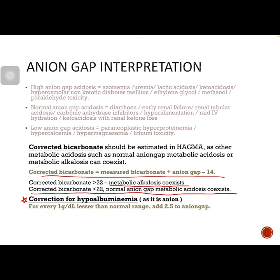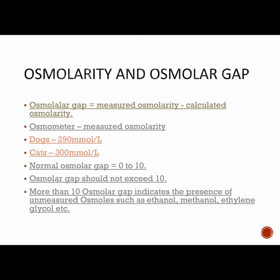If hypoalbuminemia is present, correction for hypoalbuminemia should be considered, as albumin is an anion. For every 1 g/dL below the normal range, you need to add 2.5 to the anion gap.